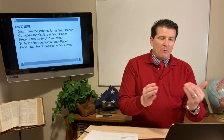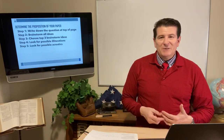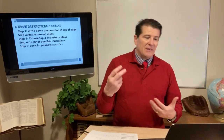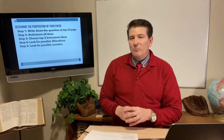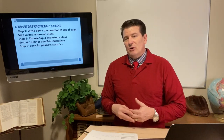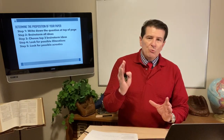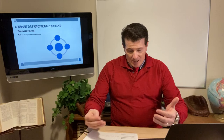So how do we write a Plural Noun Proposition paper? It begins by determining your proposition. I'm going to explain it, and ironically, we're going to use a Plural Noun Proposition to do it. How do you determine the proposition of your paper? There are five easy steps. Step one: write down the question at the top of your page. Step two: brainstorm all ideas. Step three: choose your top three brainstorm ideas. Step four: look for possible alliterations. And the fifth and final step: look for possible acrostics. Do you see how simple that is? Before I'm even finished, you know what my five points are — you know where I'm going and you have a really good outline.